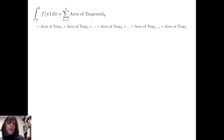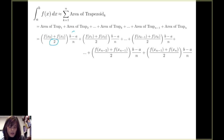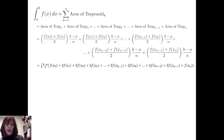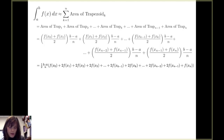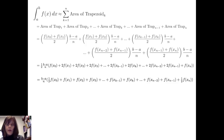We approximate the definite integral from a to b of f of x dx as the sum of the areas of the n trapezoids. In each area formula I have a factor of one-half and a factor of b minus a over n, which I can pull out in front. I then have one copy of f of x sub 0 and one copy of f of x sub n, and two copies of all other bases. Alternatively: (b minus a over n) times [one-half f of x sub 0 plus f of x sub 1 plus f of x sub 2 plus … plus f of x sub n minus 1 plus one-half f of x sub n].